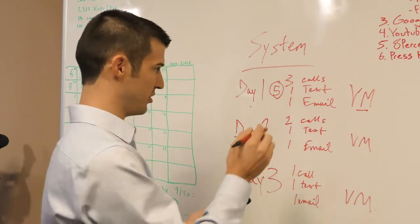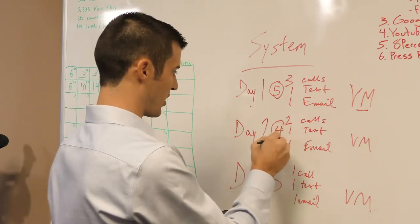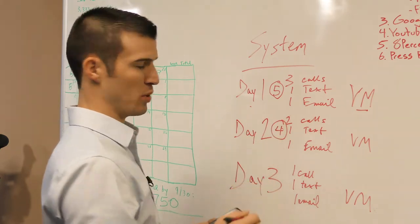Day two, two calls, a text, and an email. You'll see a pattern here. Then you're at four contacts. You're at a total of nine between the first two days.